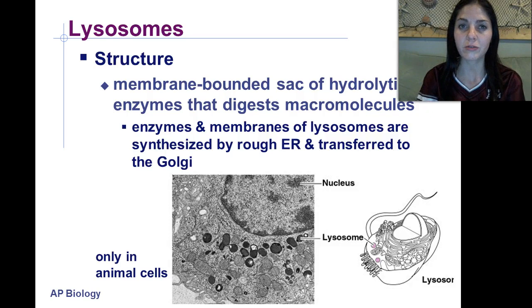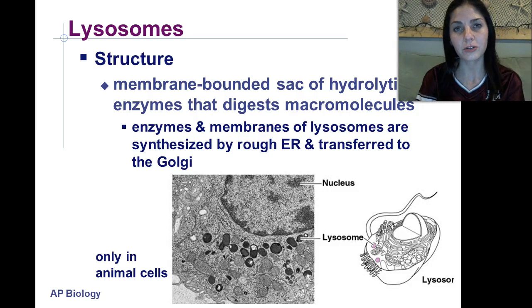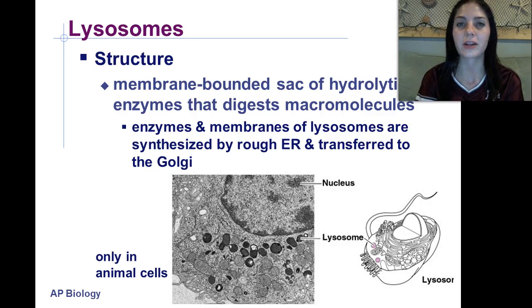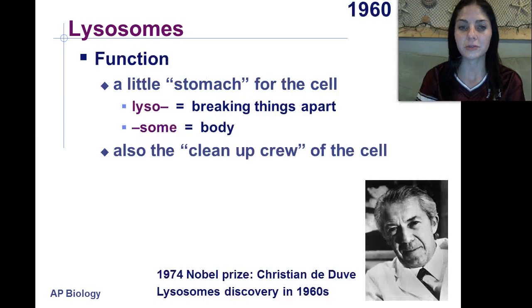Those lysosomes are formed in the endoplasmic reticulum, transported to the Golgi apparatus where they're sorted and packaged, then exported by the trans side of the Golgi apparatus, becoming fully functional lysosomes that can function within the cell.